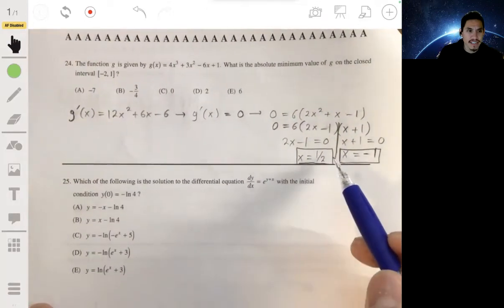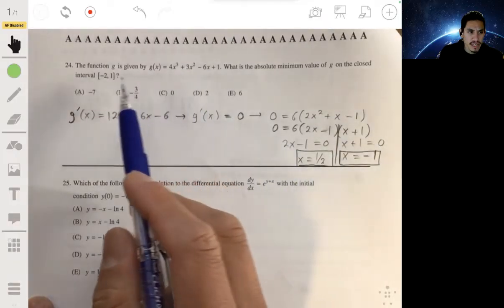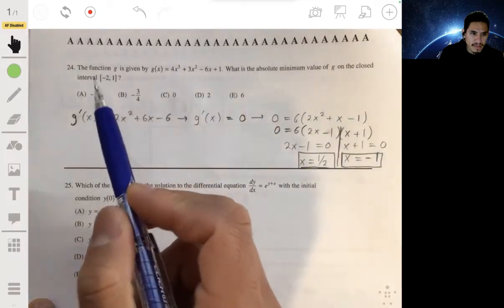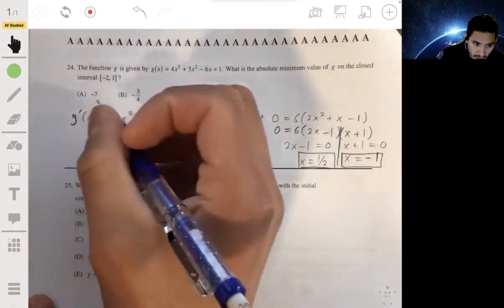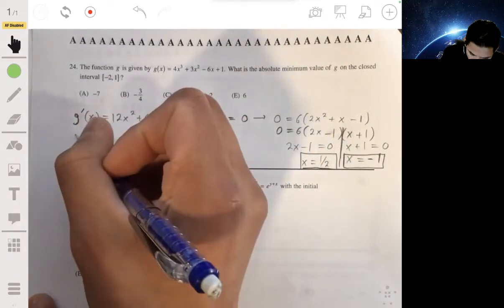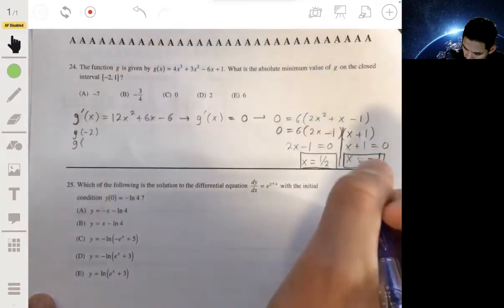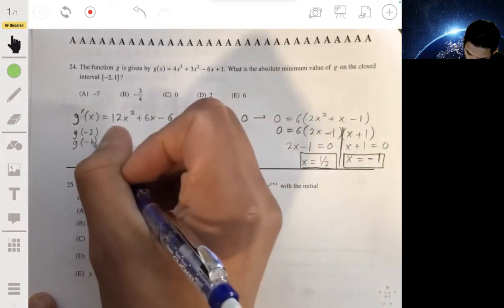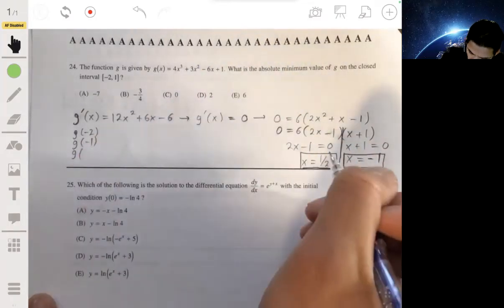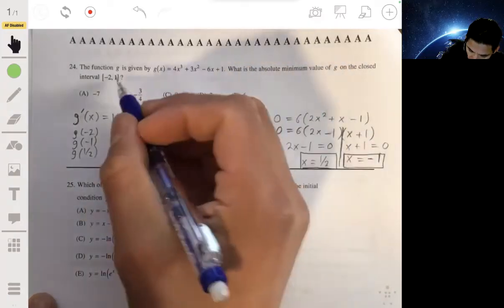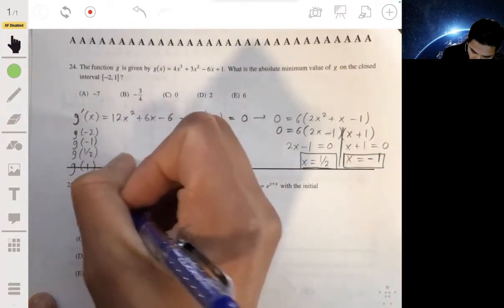Then what we can do is just test the function values at x equals one half and negative 1, but also test the endpoints and then just compare. So I would basically look at g of negative 2, g of negative 1, g of one half, and then g of 1.